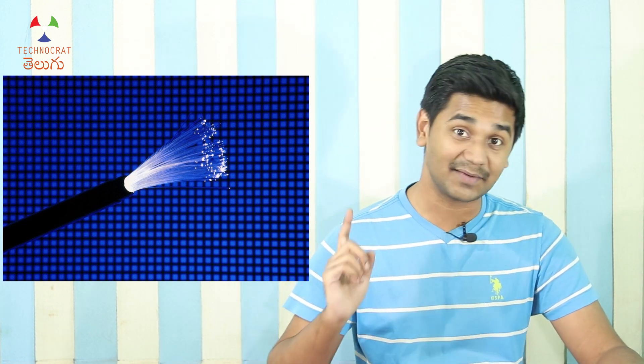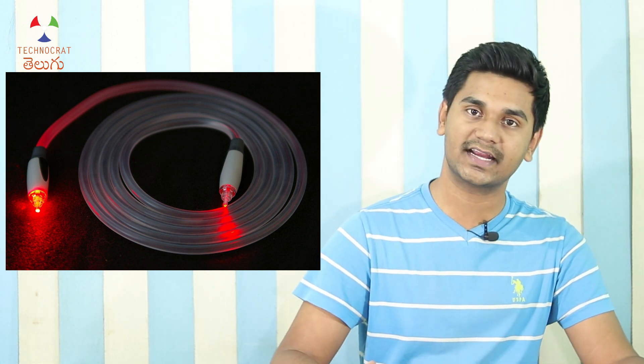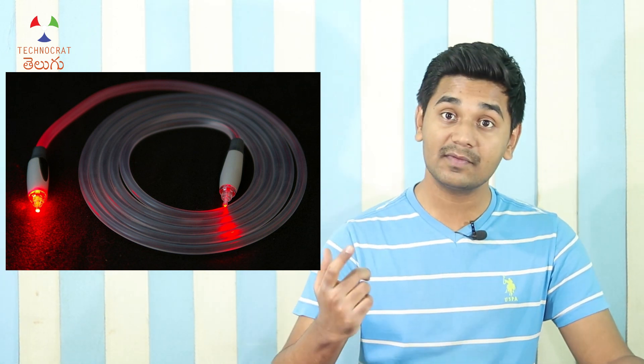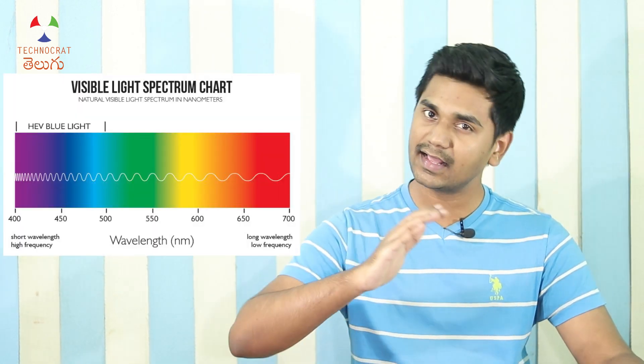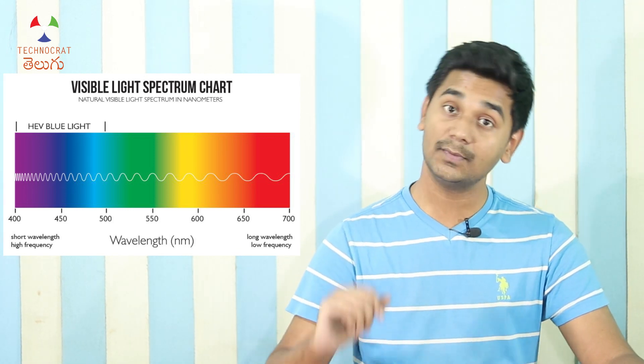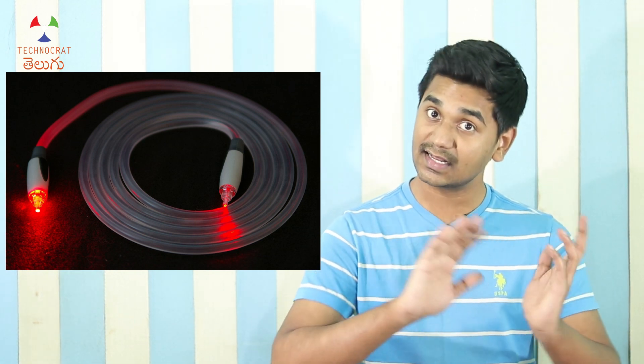We have optical fiber cables (OFC) that transfer data using light over long distances — hundreds of kilometers. In optical fiber, we use infrared light at around 1500 nanometer wavelength rather than visible light (400–500 nm), because visible light causes more distortion. We need to transfer the signal as cleanly as possible, using laser pulses to carry data.